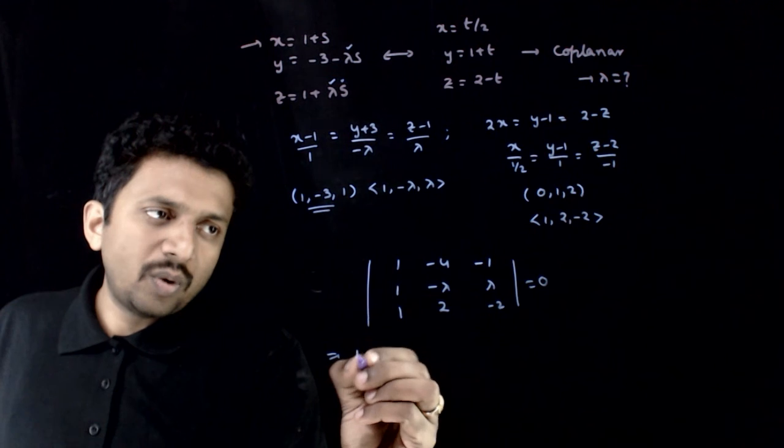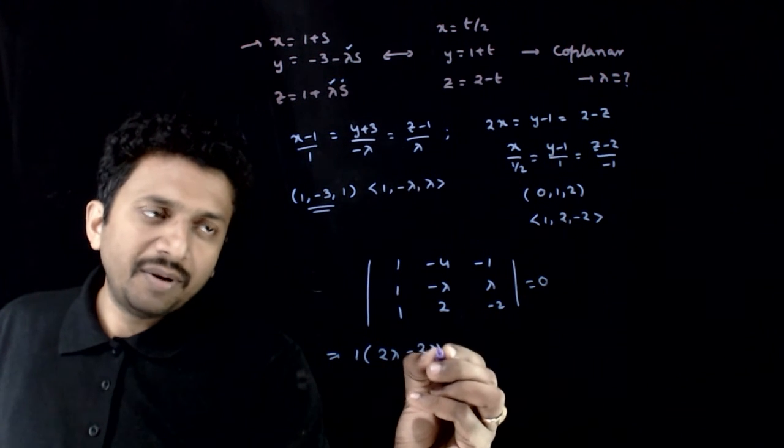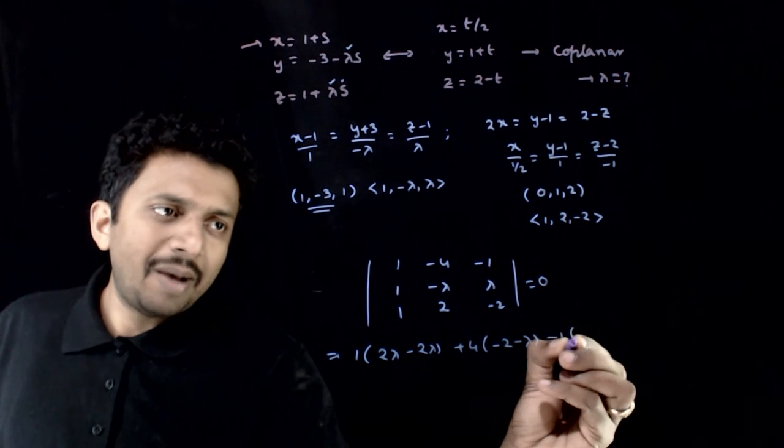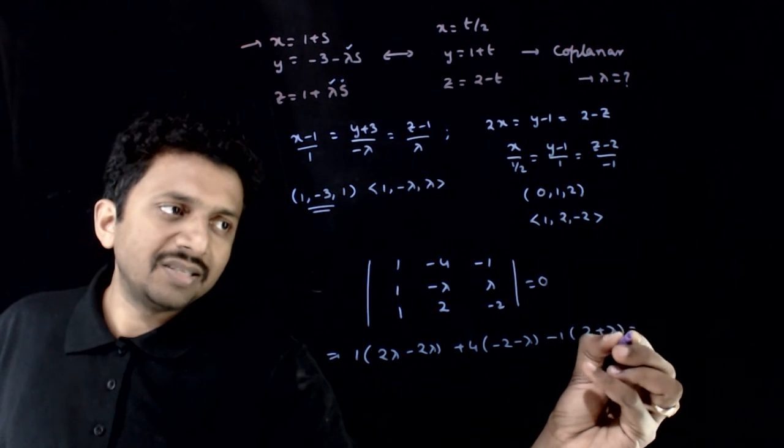This implies 1 times 2 lambda minus 2 lambda plus 4 times minus 2 minus lambda minus 1 times 2 plus lambda is equal to 0.